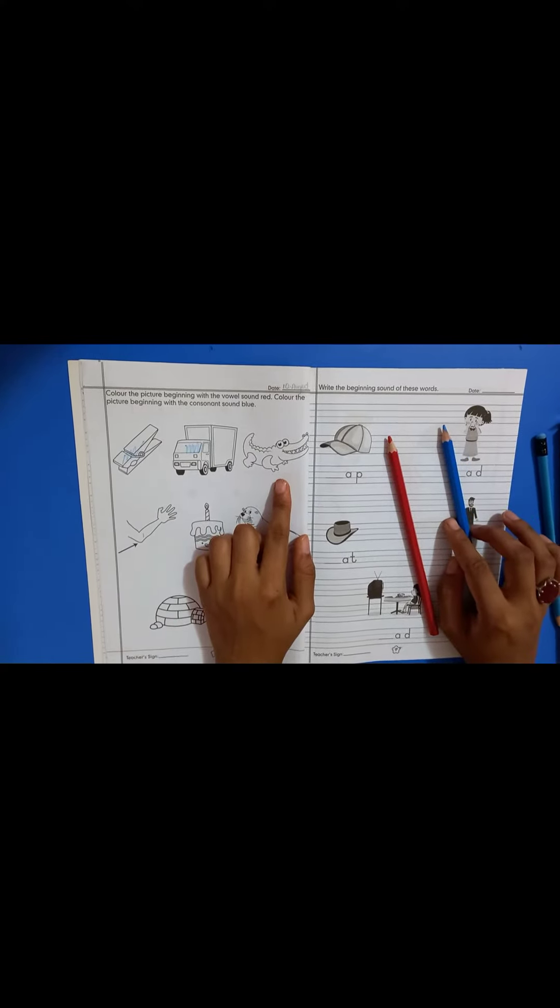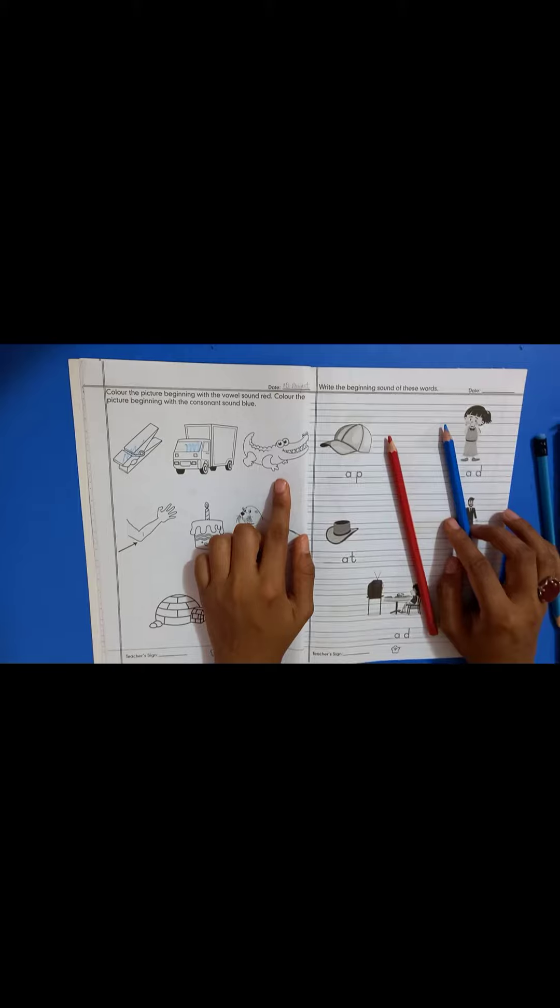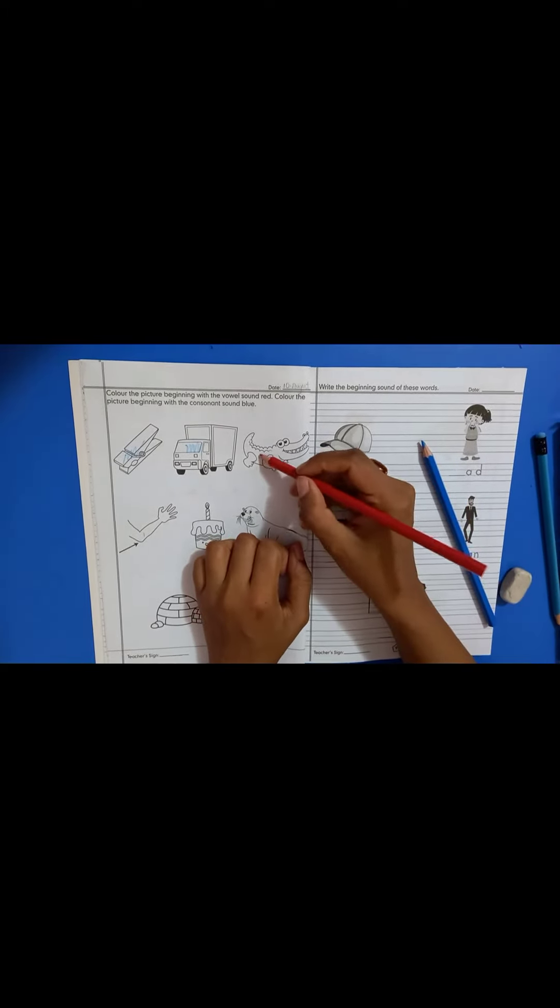Alligator. Alligator starts with A. A is a vowel, so you have to color it red.